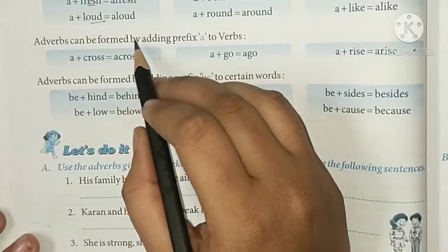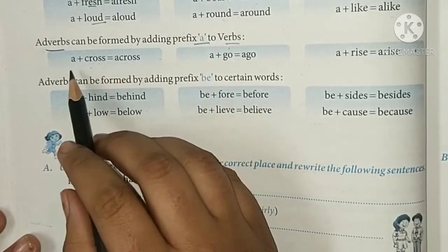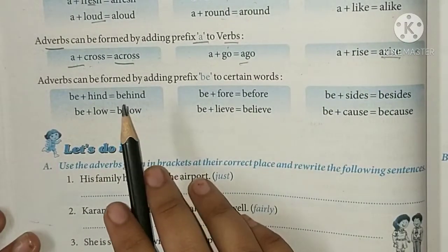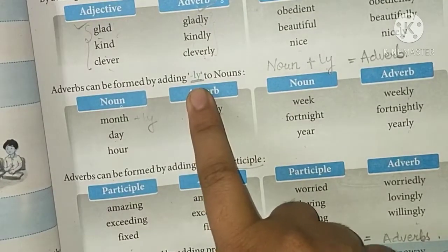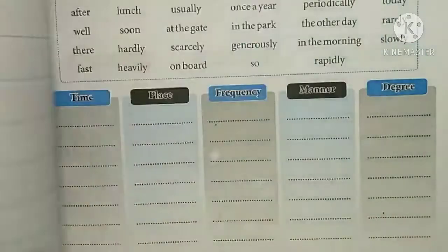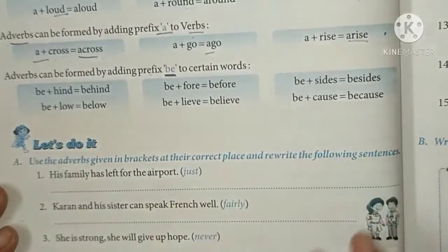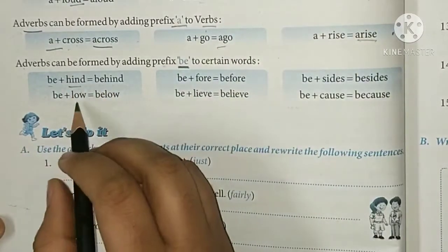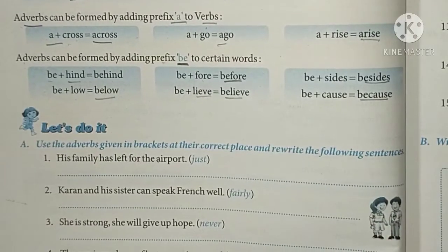Adverbs can also be formed by adding prefix 'A' to verbs. Example: cross → across, and also: ago, arise. Additionally, adverbs can be formed by adding prefix 'B' to certain words. Examples: hind → behind, low → below, for → before, leave → believe, besides, because.